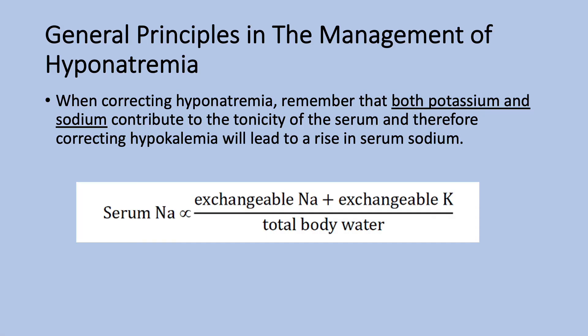When we are correcting hyponatremia, we have to remember that both potassium and sodium contribute to the tonicity of the serum. Therefore, giving potassium to someone who is hyponatremic is exactly like giving sodium. In Lecture 1, we mentioned Edelman's equation: serum sodium equals exchangeable sodium plus exchangeable potassium divided by total body water. So both potassium and sodium are active when it comes to tonicity.